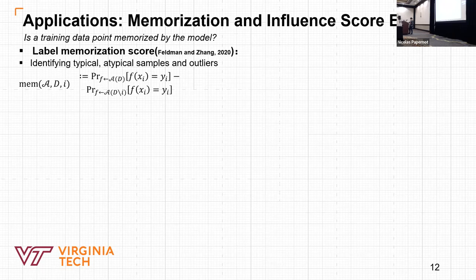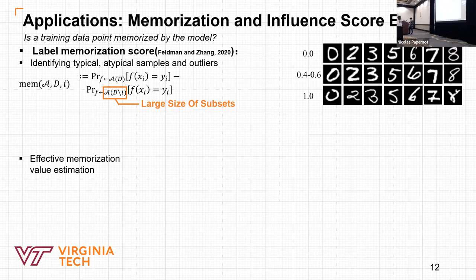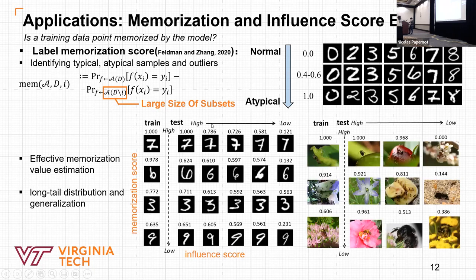For the question of whether a training data point is memorized by the model, we adopt the concept of label memorization score, which is proposed to identify and understand the utility of samples. As we can see, it also requires large retraining on subsets, so our proposed Model Parade can speed up this process. Here we show the memorization values estimated by Model Parade from the MNIST dataset. We can see the samples with low memorization scores are more atypical, which aligns with previous work. We also show pairs of samples with influence scores from high to low. Intuitively, we see that the high influence pairs correspond to similar images, which benefit most from highly memorized training samples due to the long tail distribution. So Model Parade can effectively estimate the influence memorization value.